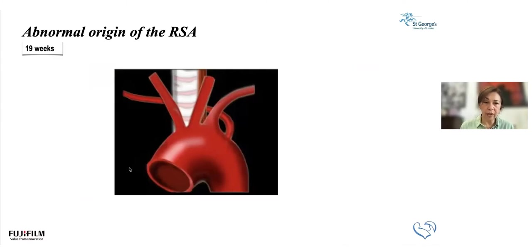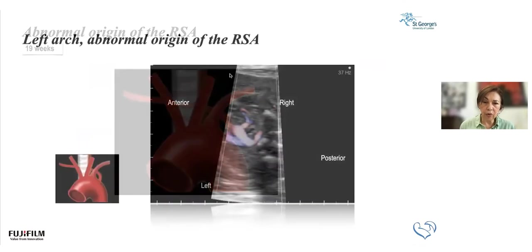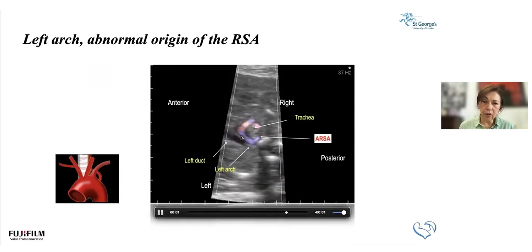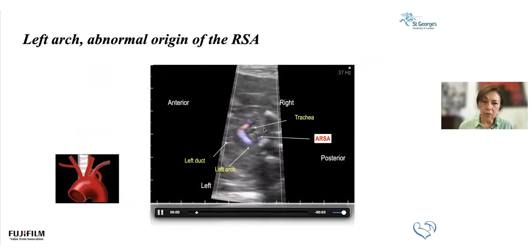We hear a lot about ARSA these days — the anomalous origin of the right subclavian artery — which originates from the descending aorta, behind the trachea and esophagus, and runs down to the right arm. This is a very common abnormality, detected more and more frequently because obstetricians and sonographers are becoming very good at using color, particularly in the first trimester, looking for markers of chromosomal abnormalities. This ultrasound image represents the abnormal origin of the subclavian artery. Here we see the trachea, the left duct, the aortic arch, a little bit of the subclavian giving rise to the internal mammary — and that is the abnormal right subclavian artery. A very characteristic image.